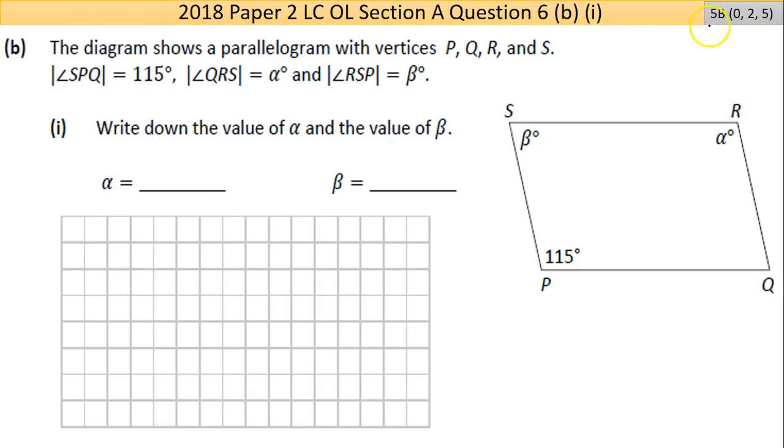Now part B here we have five marks which is parts i, ii, and iii in this question. The diagram shows a parallelogram with vertices PQRS. We see that the angle SPQ (the middle letter matters) is 115, that's shown here. The angle QRS is called alpha.